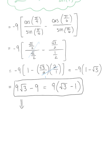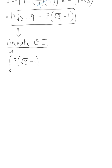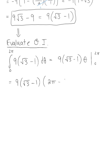We still have one more integral — the outer integral. We have the integral from 0 to 2pi of 9 times (root 3 minus 1), d-theta. This is very clean: we're left with 9(root 3 minus 1) times theta, evaluated from 0 to 2pi. Evaluating gives 9(root 3 minus 1) times 2pi minus 0, yielding a final answer of 18pi times (root 3 minus 1).